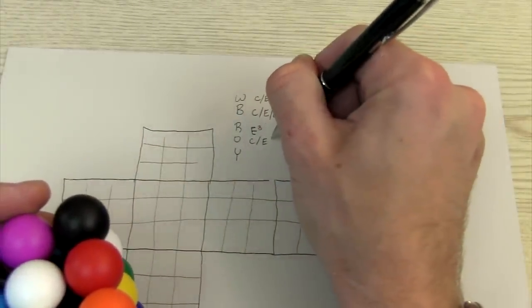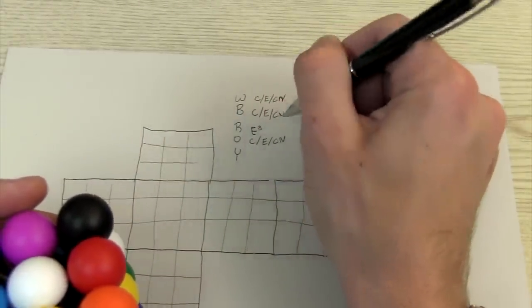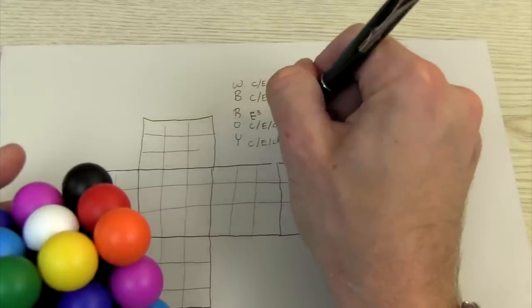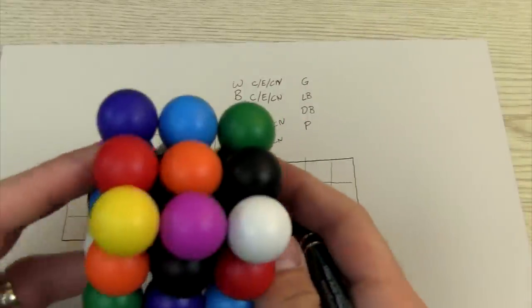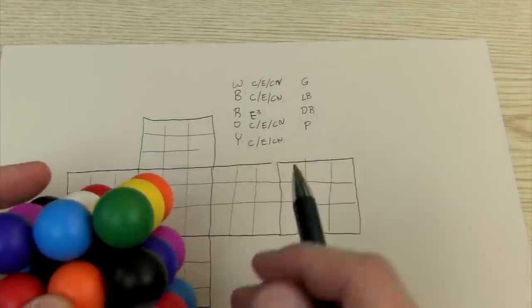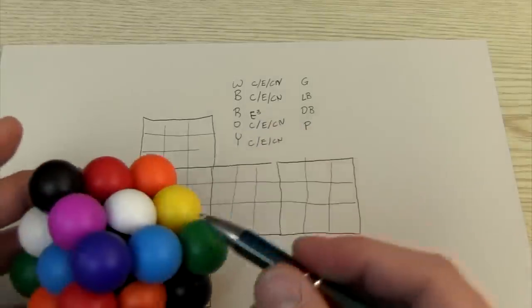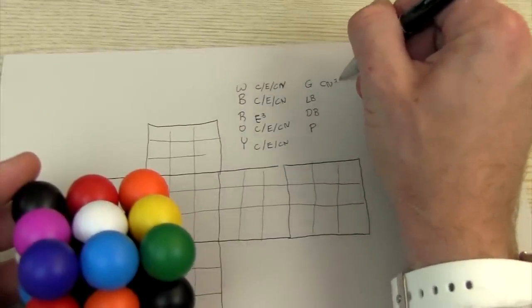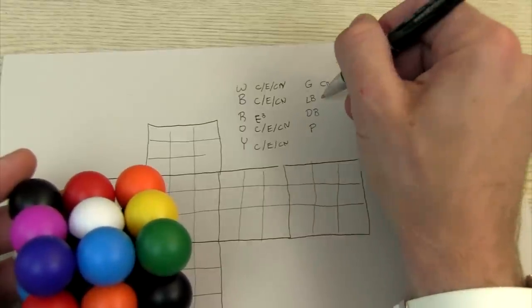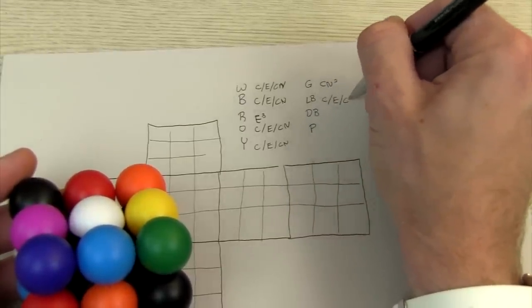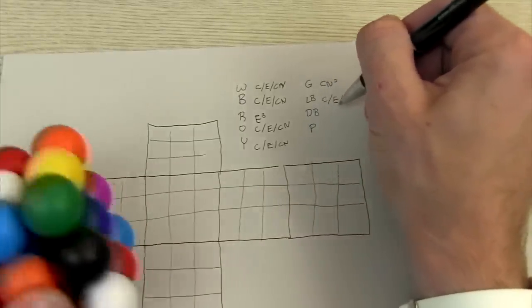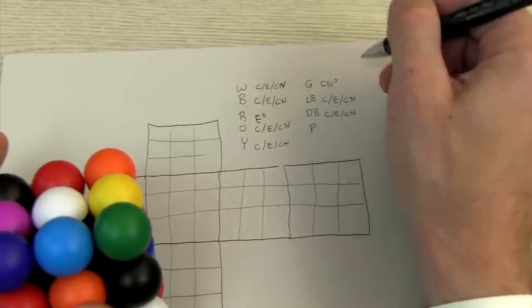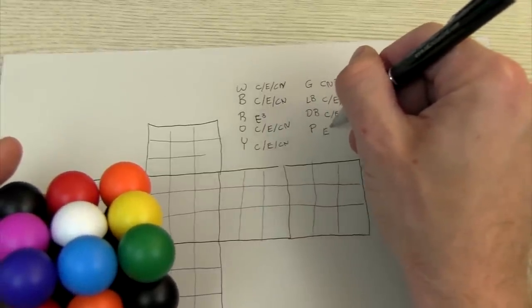And so then I started realizing that any of the colors that had a center also had one edge and one corner. Anything that didn't have a center either had three edges or light green had two corners. And then light blue was a center, edge, corner. Dark blue was a center, edge, corner. And purple was three edges.